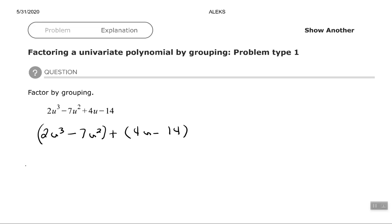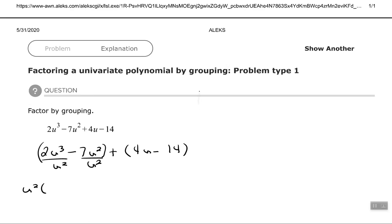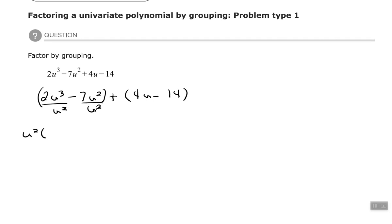So I'm going to factor out u² from the first parentheses. And then the second group there, the greatest common factor is two. So it gives me u² times 2u minus 7 plus 2 times 2u minus 7. And then I'm going to factor out the common binomial of 2u minus 7.